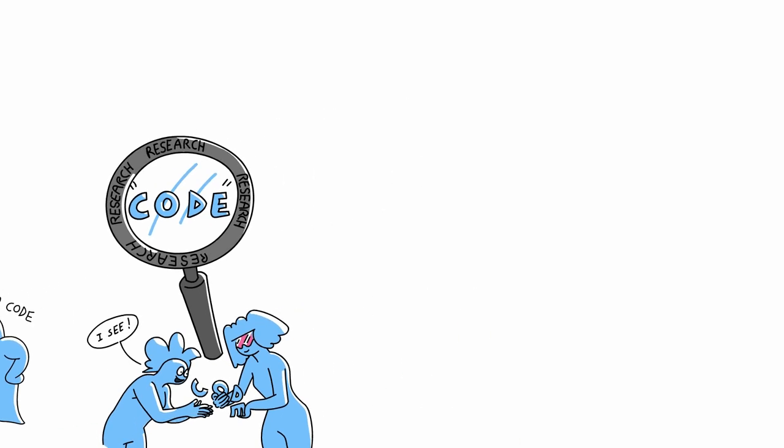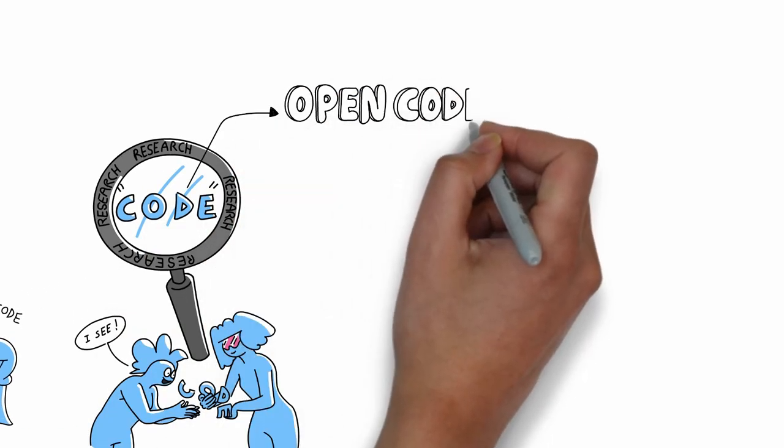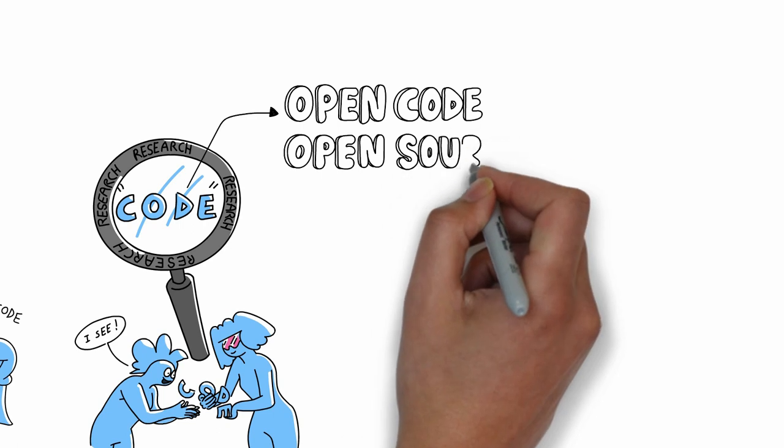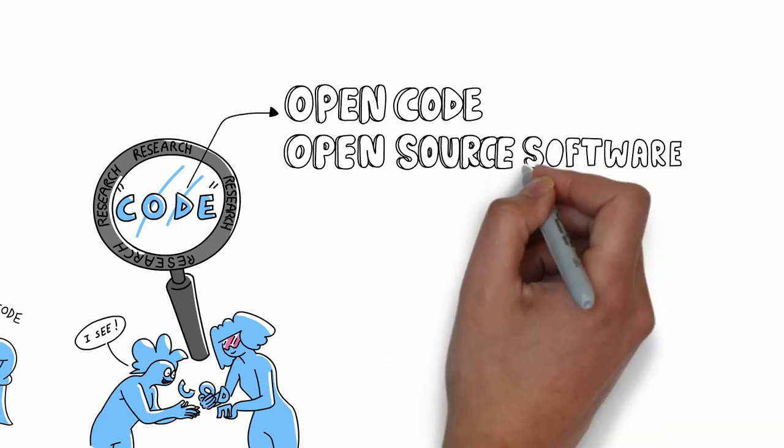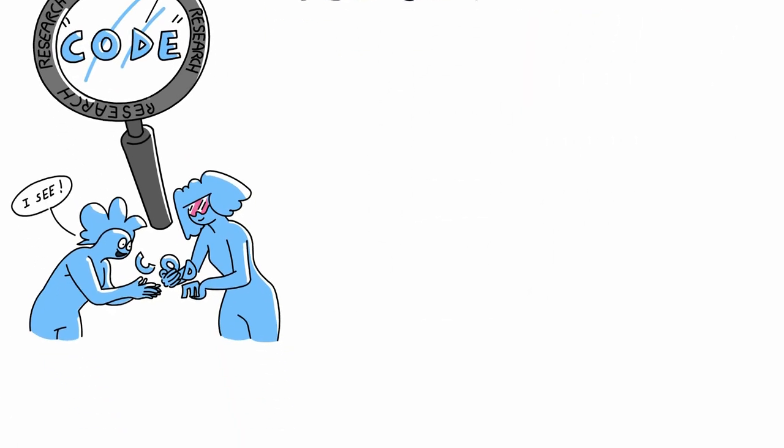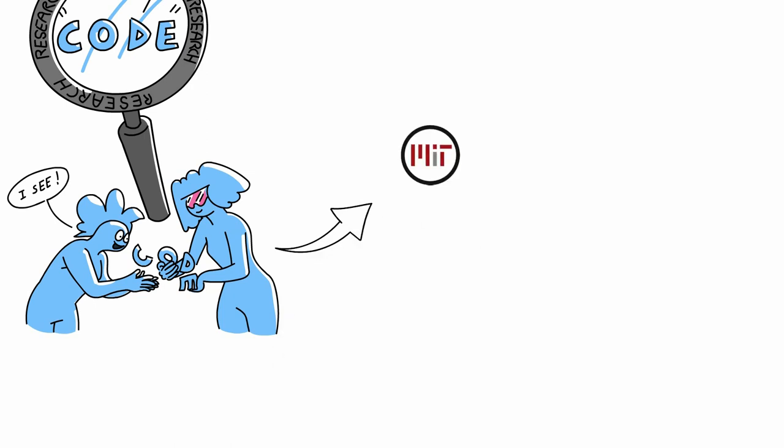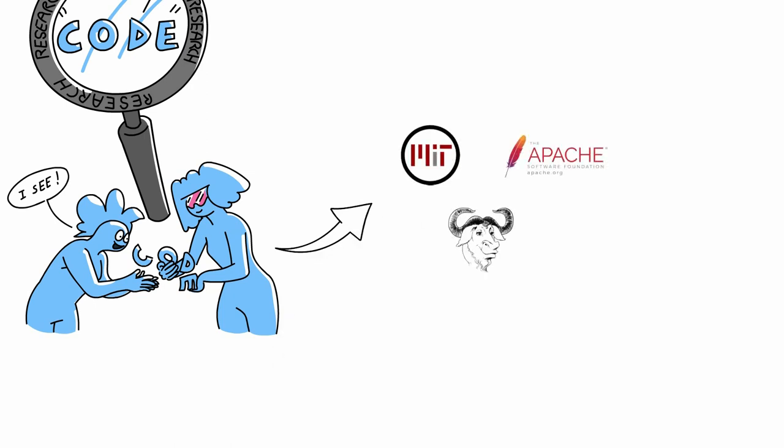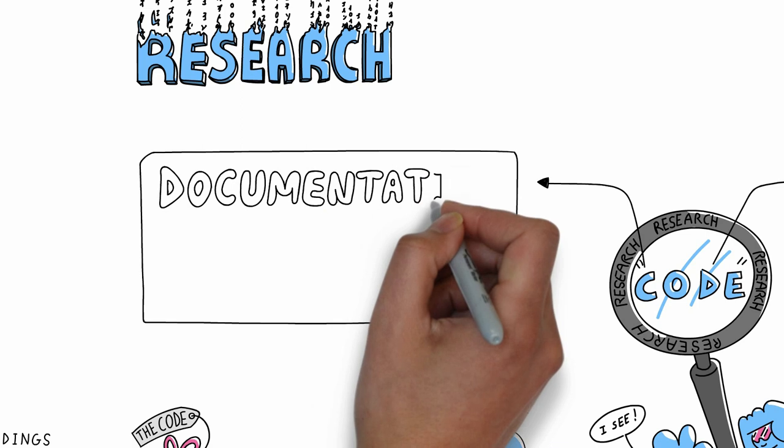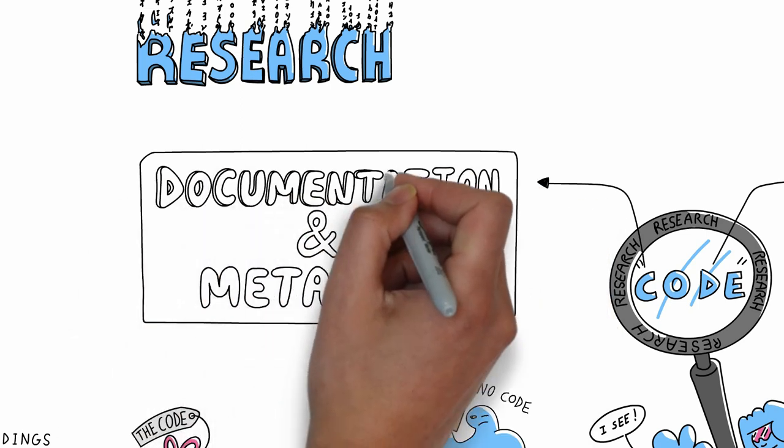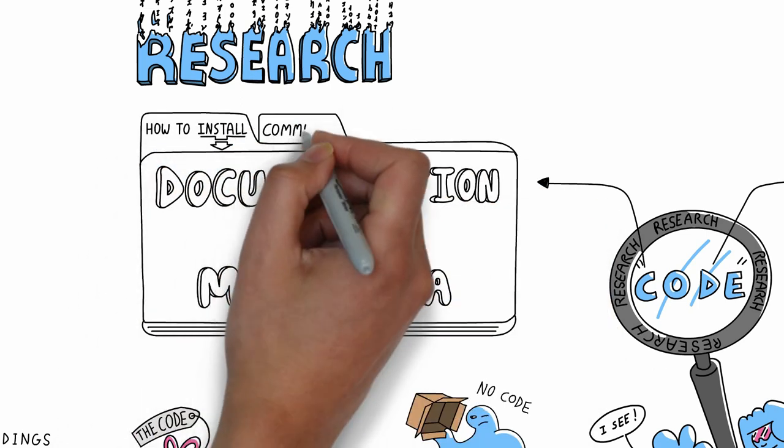Code that is made freely available to others is called OpenCode or open-source software. The authors will assign it an open-source license so others can legally reuse it, and it should include documentation and metadata to help others use it properly, such as how to install it or comments in the code to explain how it works.